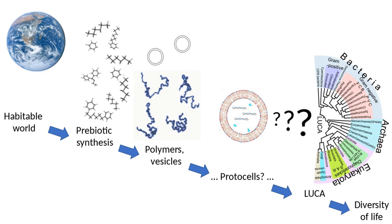By the middle of the 19th century, the theory of biogenesis had accumulated so much evidential support due to the work of Louis Pasteur and others that the alternative theory of spontaneous generation had been effectively disproven. Pasteur himself remarked after a definitive finding in 1864: "Never will the doctrine of spontaneous generation recover from the mortal blow struck by this simple experiment."